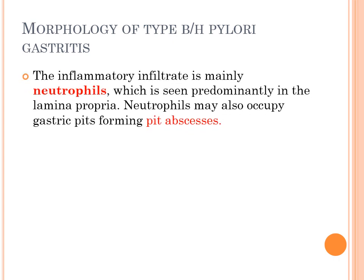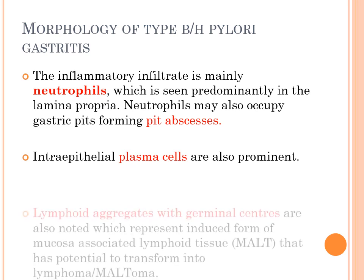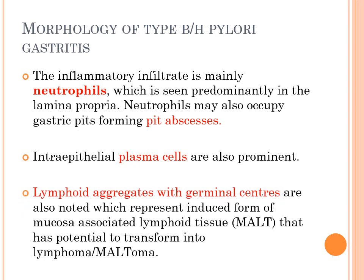Regarding the morphology of Helicobacter pylori-induced gastritis: although it is a chronic type of gastritis, the inflammatory infiltrate is mainly neutrophils, predominantly seen in the lamina propria — which is why we call this chronic active gastritis. These neutrophils may also occupy gastric pits, forming pit abscesses. Along with neutrophils, you also get intraepithelial plasma cells and lymphoid aggregates with germinal centers — an induced form of mucosa-associated lymphoid tissue with potential to transform into MALToma.